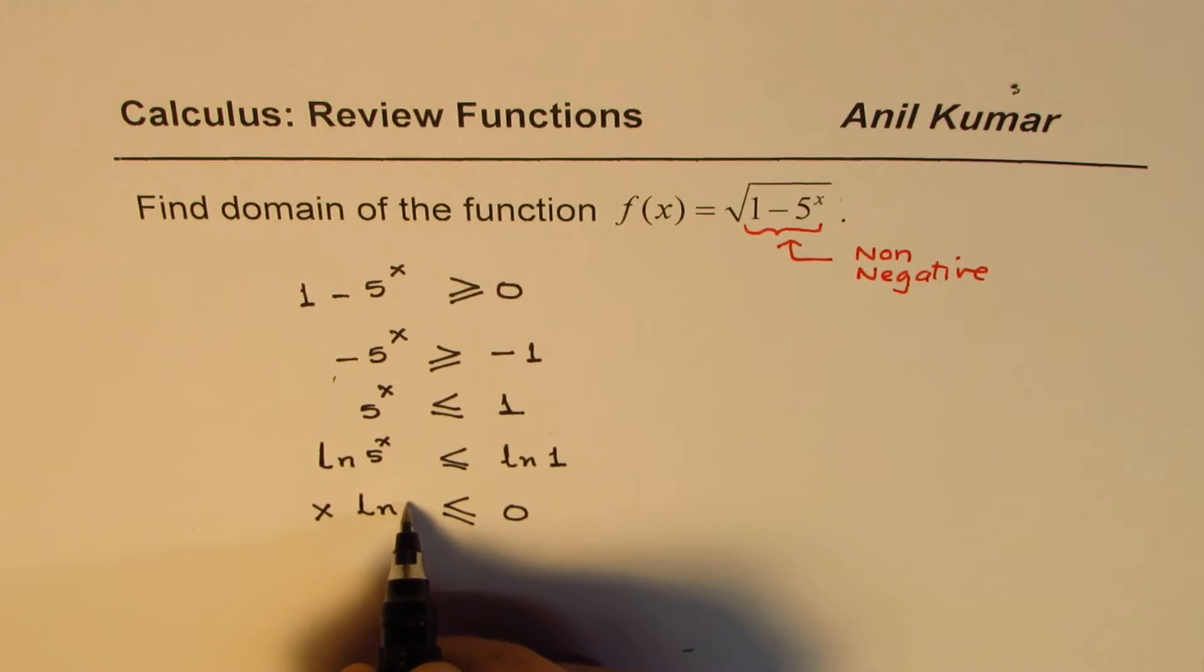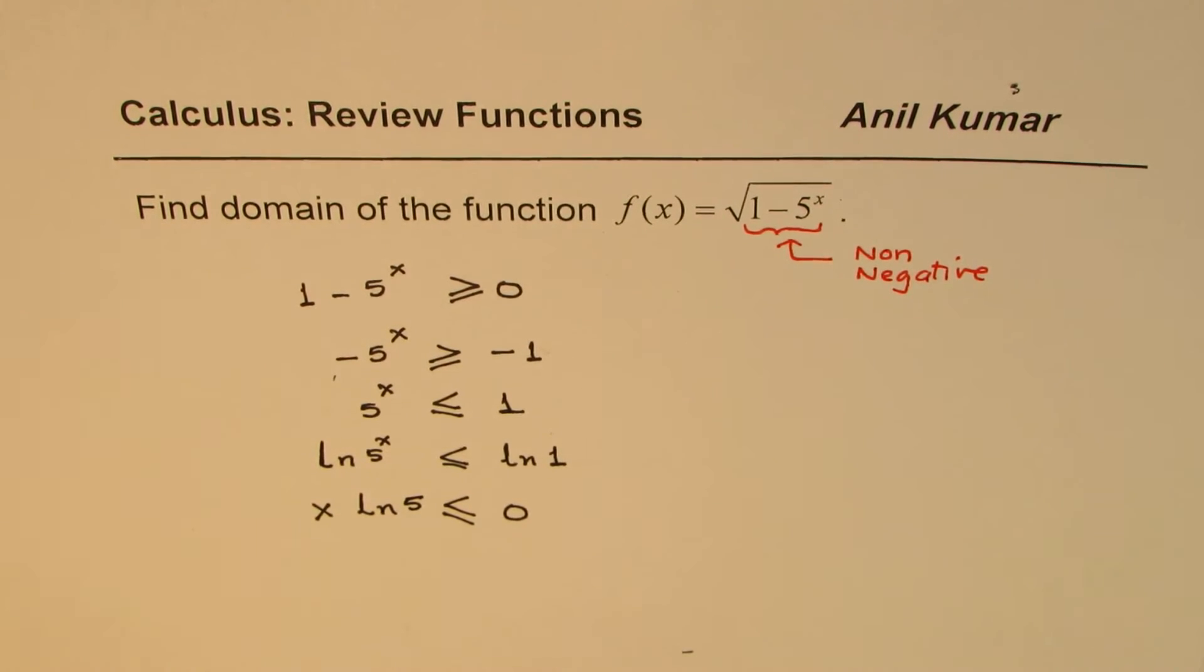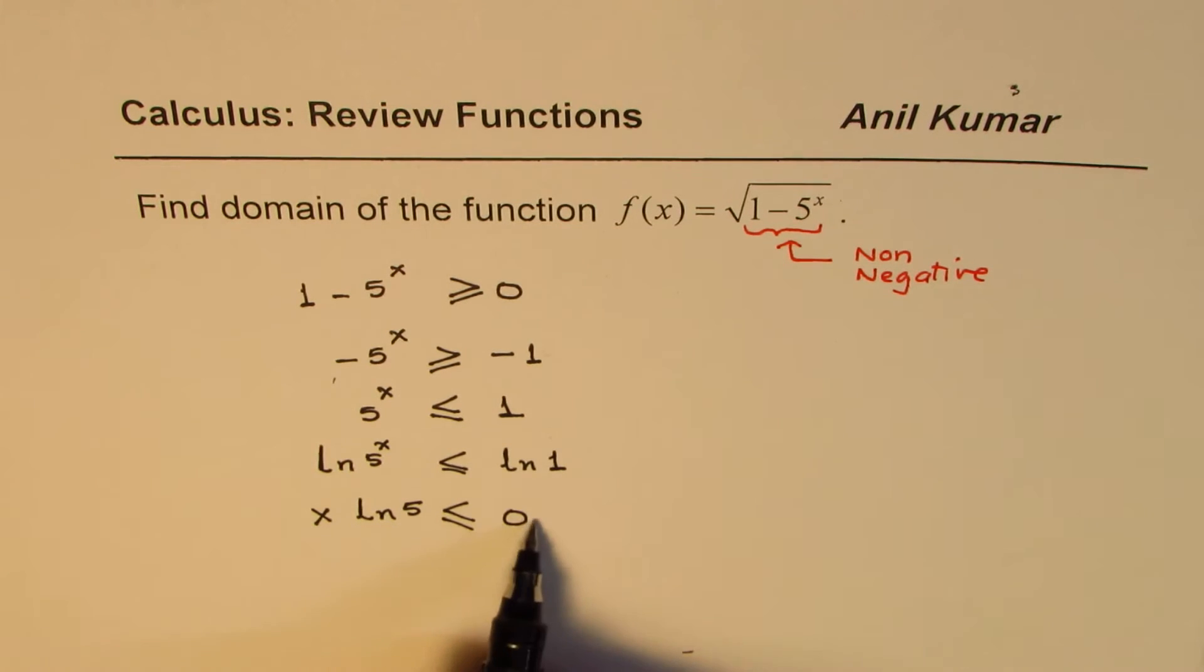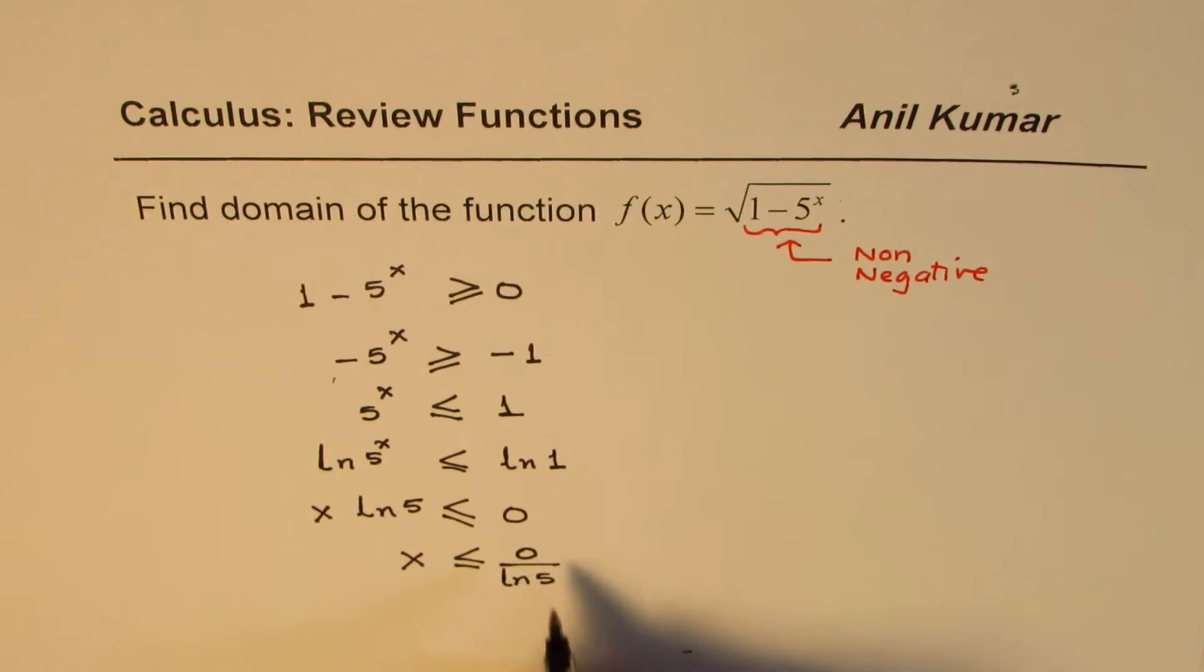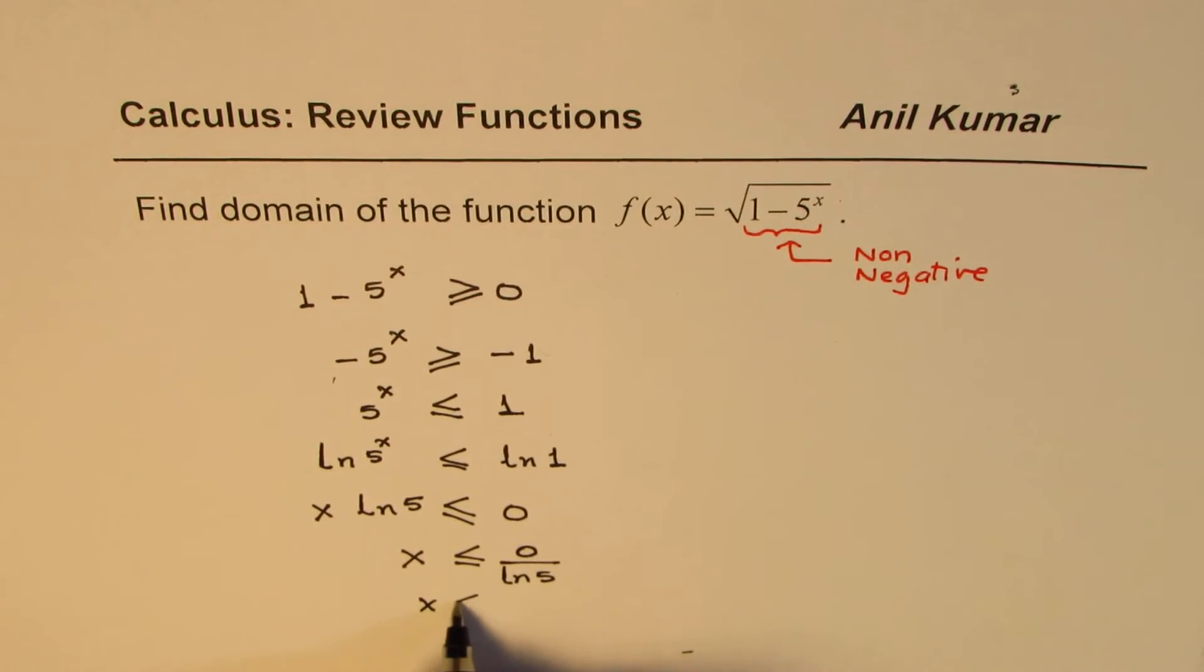Solving this, we can get 0 divided by ln 5 is 0, so x should be less than or equal to 0 divided by ln 5, which is 0. So x should be less than or equal to 0, so that is the solution.